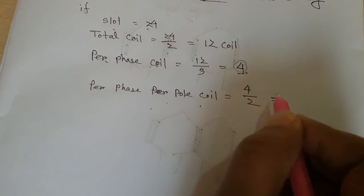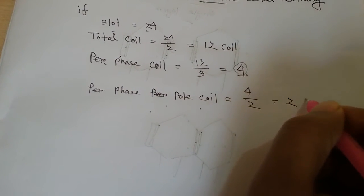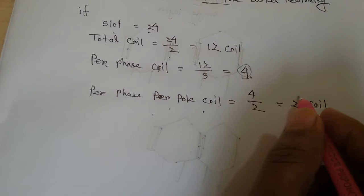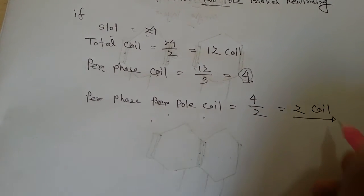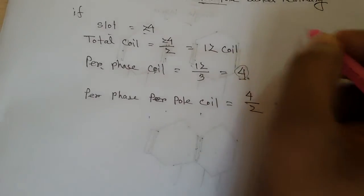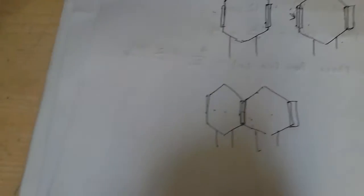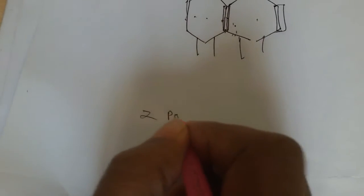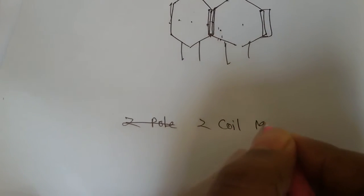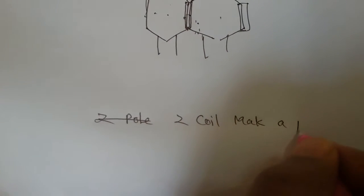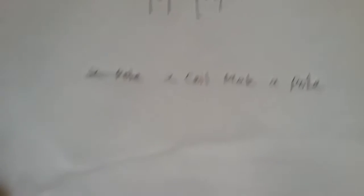So here is 2 coils. That means 2 coils make a pole. 2 coils make a pole.